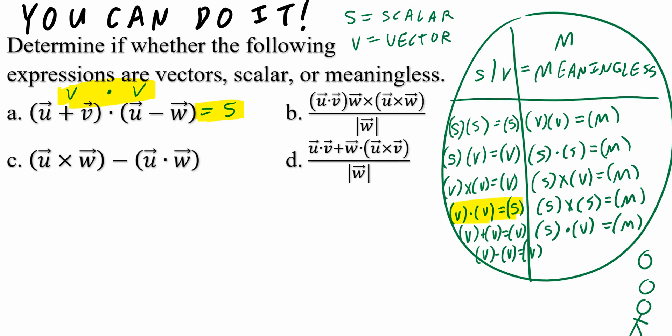Part B: (vector U dotted to vector V) times vector W cross (vector U cross vector W), all over the magnitude of vector W. The dot product of two vectors is a scalar. A scalar multiplied by a vector is still a vector. Vector U cross vector W is a vector, and crossing two vectors gives a vector. Dividing a vector by a magnitude — a scalar — is still a vector. So a scalar times a vector gives a vector outcome.